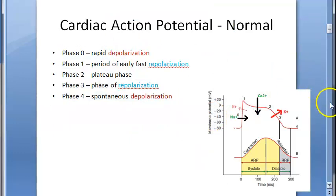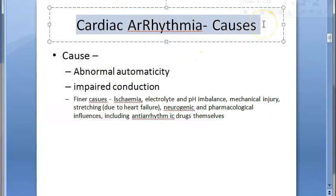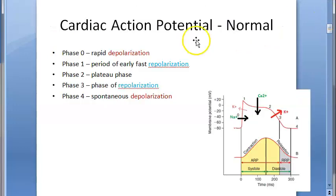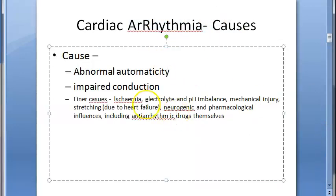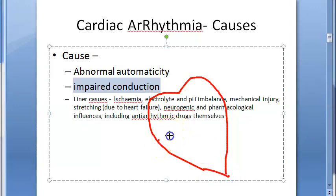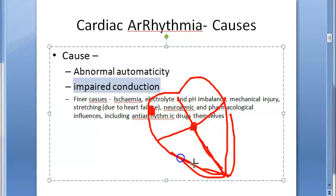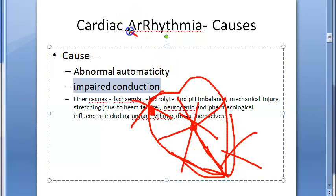What causes cardiac arrhythmia? The causes are abnormal automaticity and impaired conduction. The SA node produces its own electrical signals — that is automaticity. The heart is automatic, with its own pacemaker. Then you have the AV node and Purkinje fibers — that is conduction. If there is impaired automaticity or impaired conduction, there can be arrhythmia.